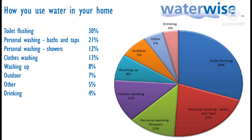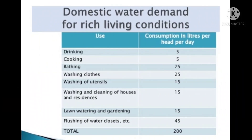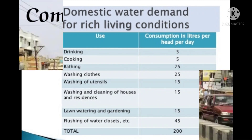Since it is not entirely possible to determine actual consumption, IS code 1171:1971 provides a provision of 135 liters of water per day per person for Indian conditions. In developed countries or rich living conditions, this ratio is around 250 to 350 liters per day. The higher consumption in developed nations is due to modern facilities such as air conditioners and air coolers. About 50 percent of the total daily water is spent on household consumption.